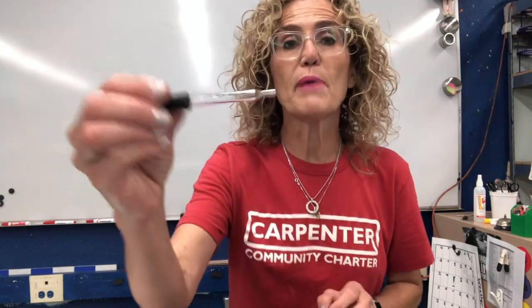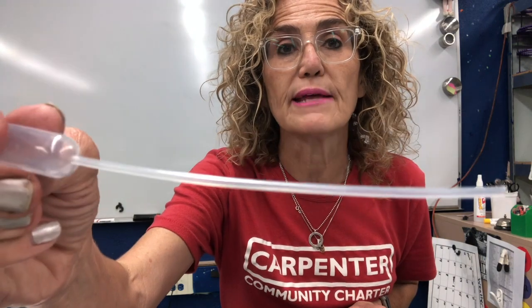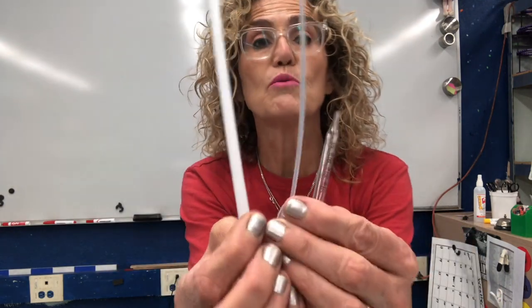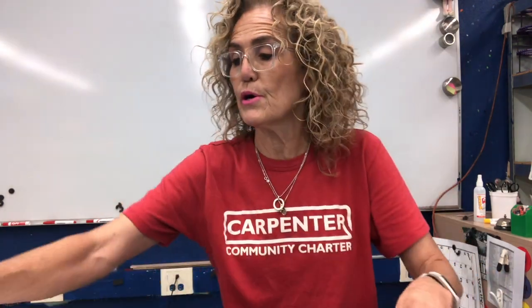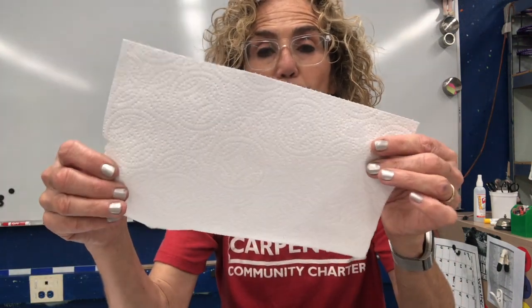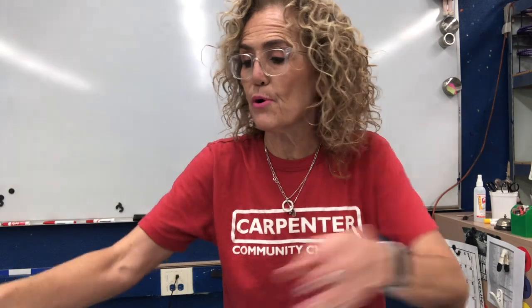So what we're going to do today is investigate some properties of water and how water interacts with different materials. These are the things you need to get out of your science kit. You might have an eyedropper like this, or one like this. If you've lost your eyedropper and you have a straw, you can use a straw instead. You also need a piece of wax paper, a paper towel, plain white paper, and aluminum foil.